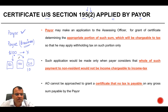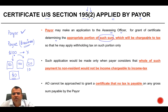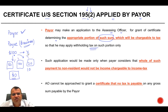One important thing to note is that if the payer believes the amount chargeable to tax is zero — meaning the amount is exempt from tax — an application under Section 195(2) cannot be made to confirm this. The payer may make an application to the Assessing Officer for a certificate determining the appropriate portion of such sum which is chargeable to tax, so that he may apply withholding tax on such portion only.